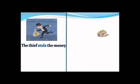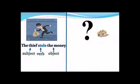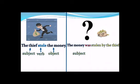Let's start with this example. Have a look at this picture — we have a thief and a bag of money. The thief stole the money. The subject is 'the thief,' the verb is 'stole,' and the object is 'the money.' The question here is: what happened to the money? We are focusing on the action, which is stealing the money.